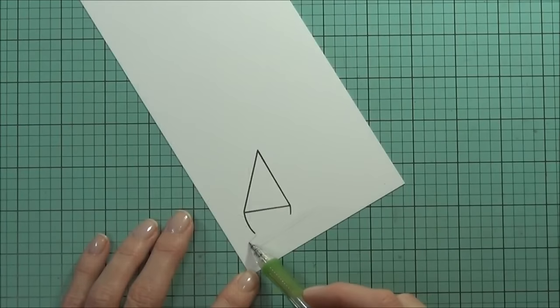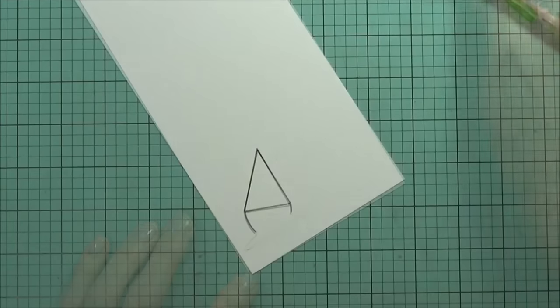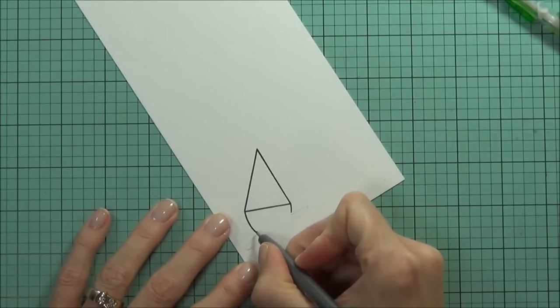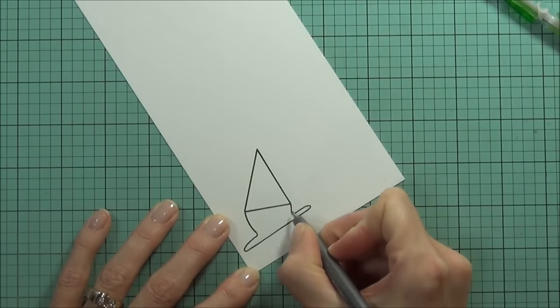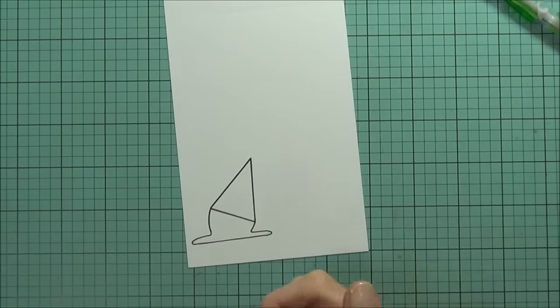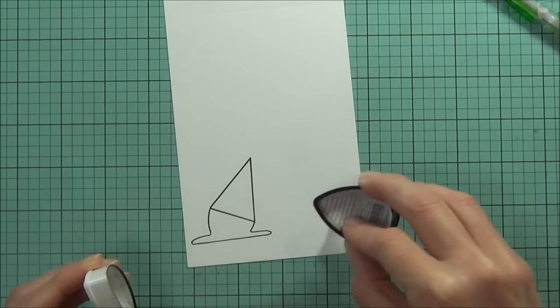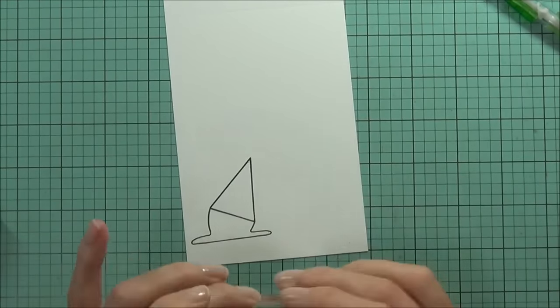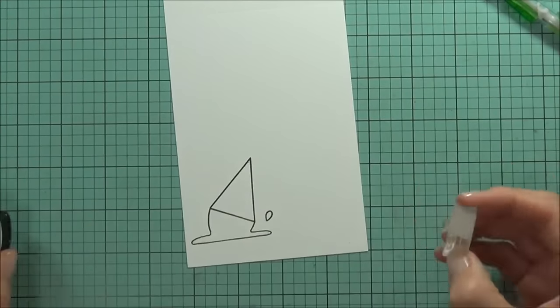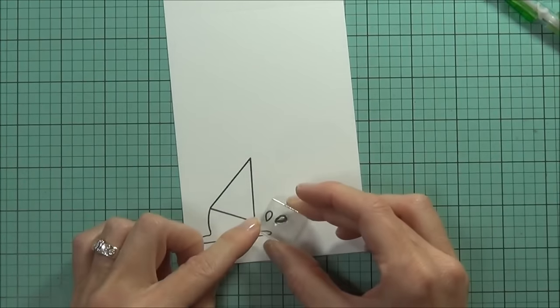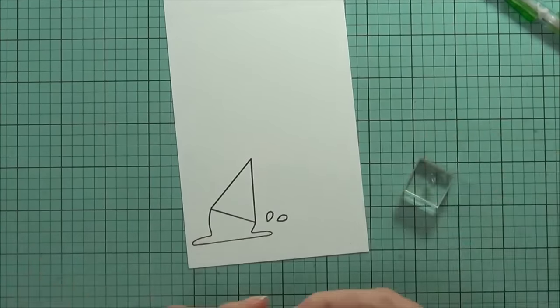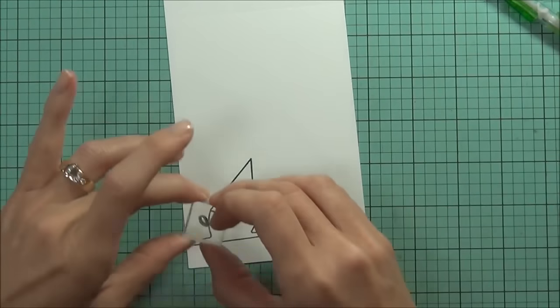Once I've stamped my image, I just got a pencil and drew in the bottom of the ice cream, and then took my Copic multi-liner, this is a point five, and I just add a few little drips of ice cream. These come in the same set as well.